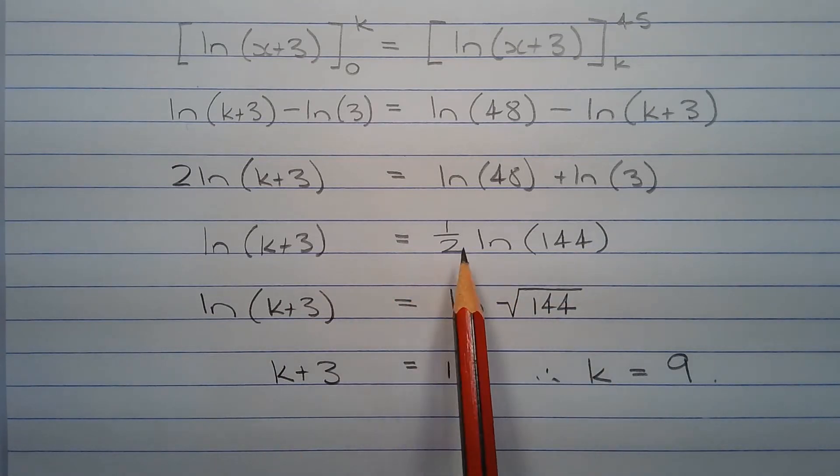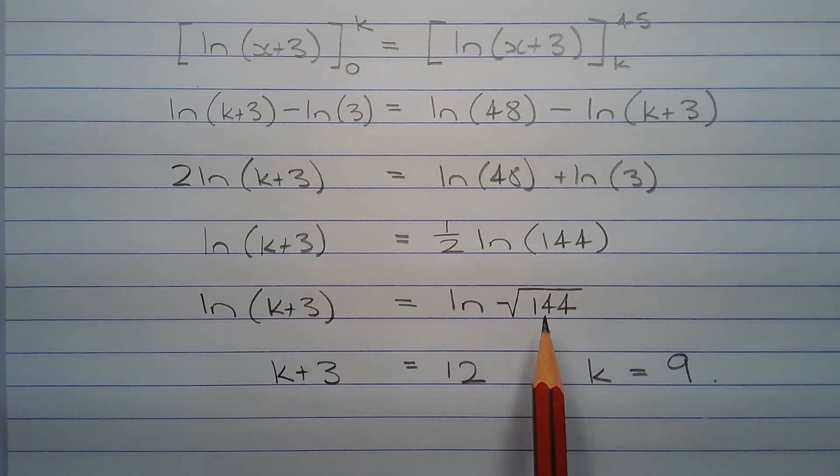Now half times ln of 144 is equal to ln of the square root of 144 by application of yet another logarithm law. And since we are equating two logarithms with the same base the arguments of these logarithms must be identical. So k plus 3 must equal 12 which is the square root of 144. Therefore k equals 9.